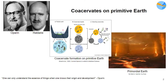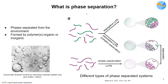These droplets basically segregated or separated themselves from the warm little pond or the environment, and this phenomenon is nothing but phase separation. This involves one or more polymers. As you can see in this diagram, two polymers indicated in green and purple can segregate themselves from each other to form segregative LLPS — liquid-liquid phase-separated systems — and these are not coacervates.